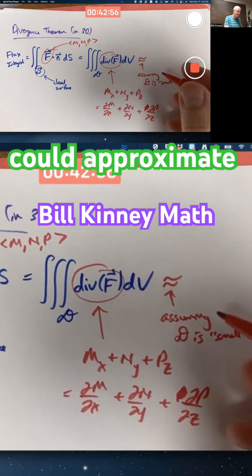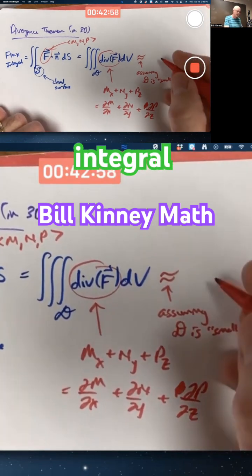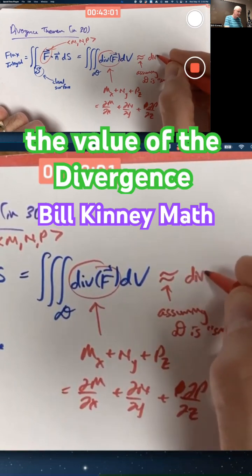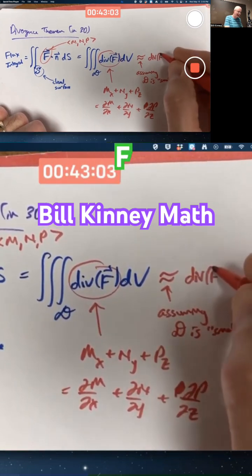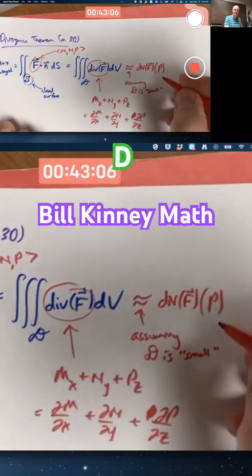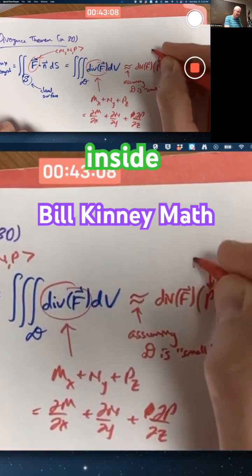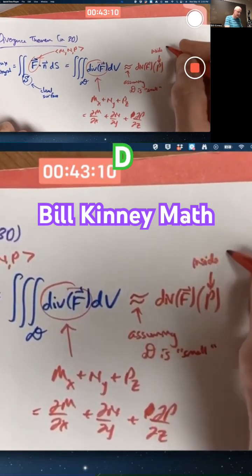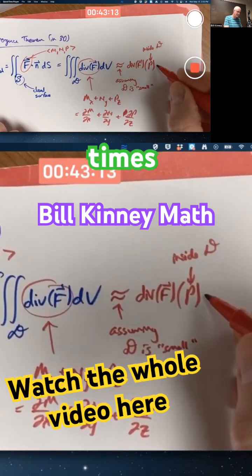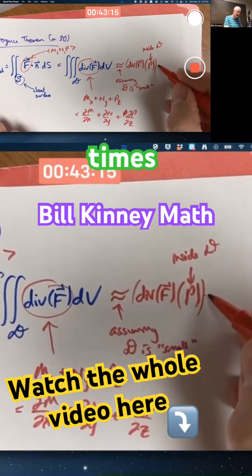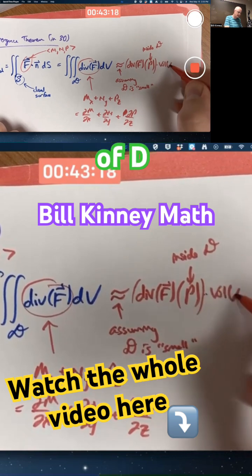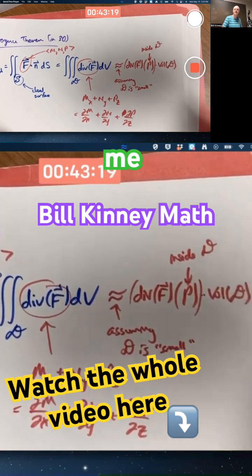You could approximate this triple integral as the value of the divergence of F at some point P inside D, times the volume of D. So, let's move on.